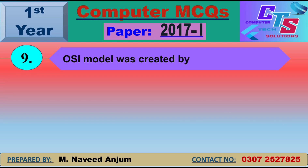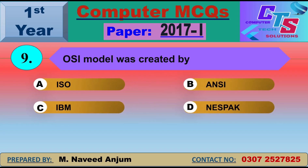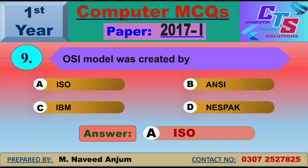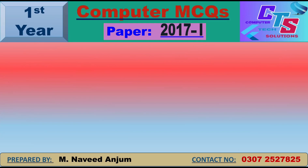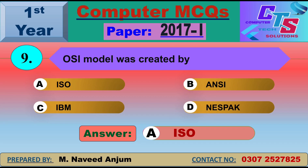Question number 9: The OSI model was created by whom? This question from Chapter 2 frequently appears in papers. The OSI model was created by ISO — International Organization for Standardization. Option A — ISO — will be the right answer. Students are asked about the OSI model's layers, when it was created, and who made it, so read this topic carefully.